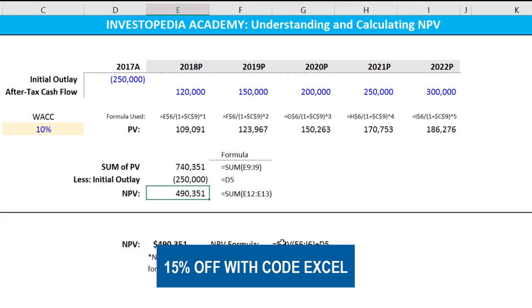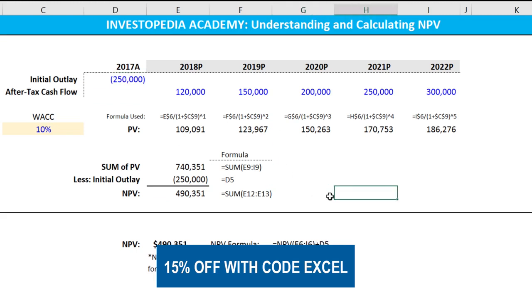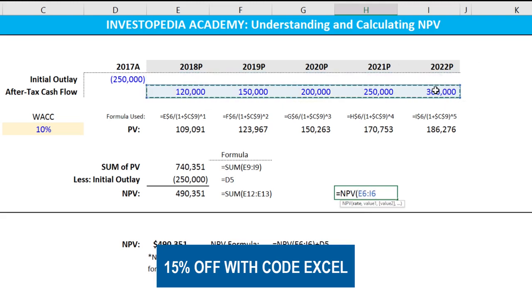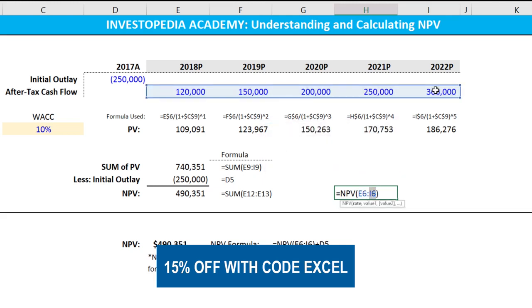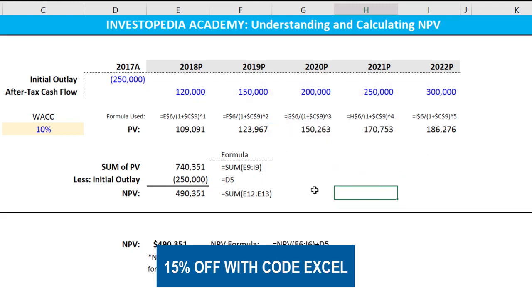A common error when using the built-in Excel formula is people forget to add back in the initial outlay. You'll see that if we were to try to create this formula without adding back in that initial outlay, we would get an error — too few arguments. So that is how you create a net present value in Excel.